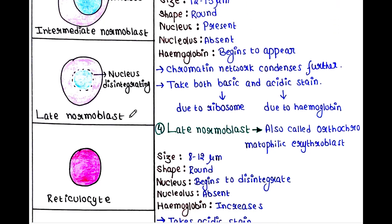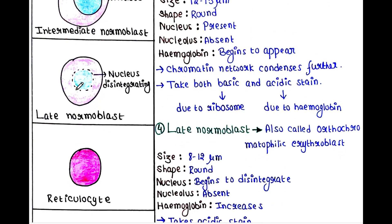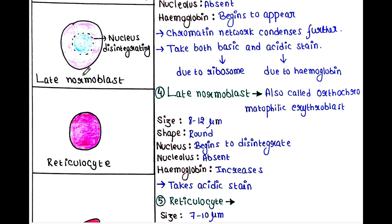Next is the late normoblast, also called orthochromatophilic erythroblast. Size of this cell: 8 to 12 micrometers, a little bit smaller than the intermediate normoblast. Shape: round. Nucleus begins to disintegrate. Nucleolus: absent. Hemoglobin increases, and it takes acidic stain.